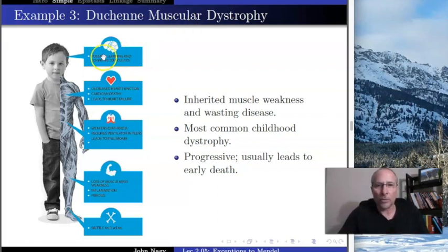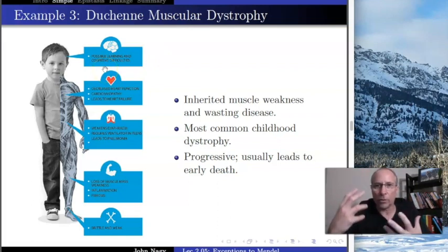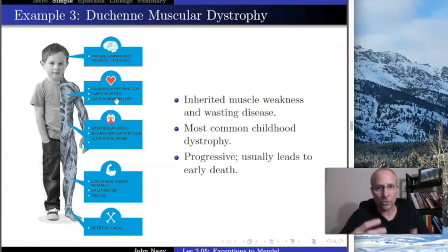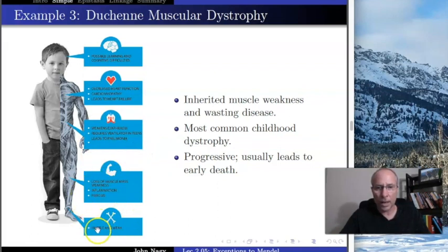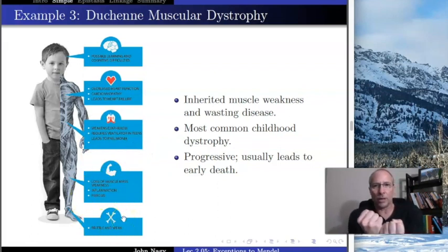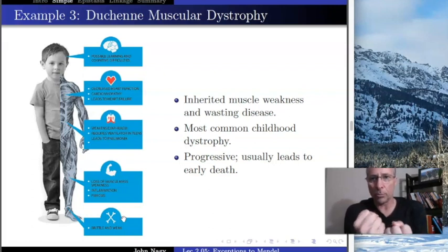They also have other problems. They have learning difficulties because of lack of blood flow to the brain. There's decreased heart function because the heart is also affected. With the respiration issues and because the bones are not being pulled on by these muscles, they atrophy as well, becoming brittle and very easily broken.